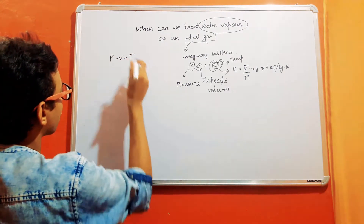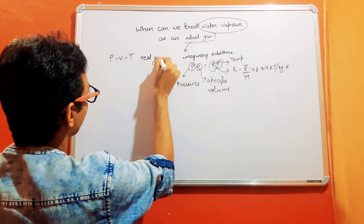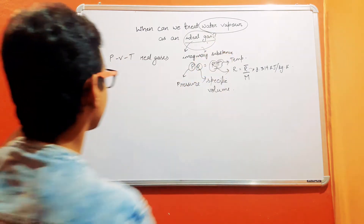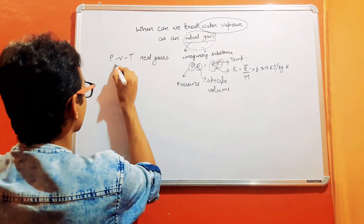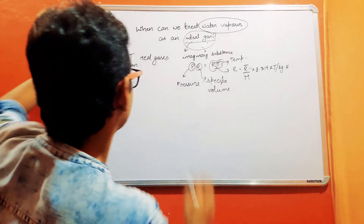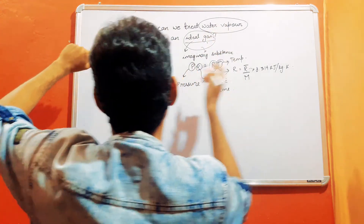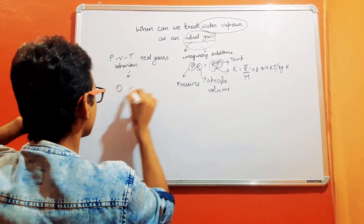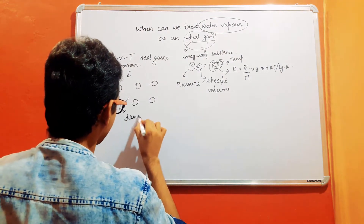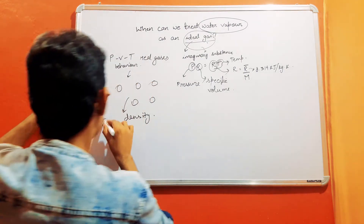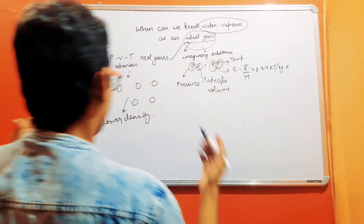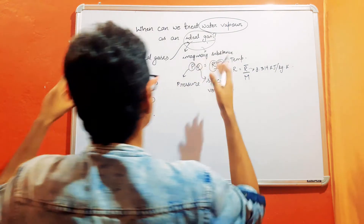Now, what is the significance of this ideal gas if it is an imaginary substance? The significance is that the PVT behavior of real gases closely follows that of ideal gases at lower density — that is, when the molecules of real gases are farther apart — and the PVT behavior of real gases closely approximates that of ideal gases.